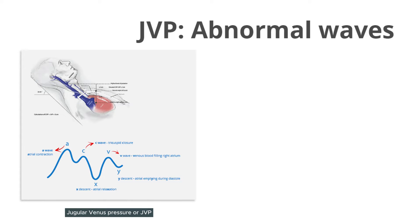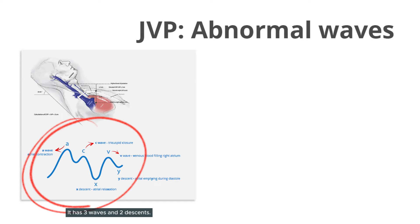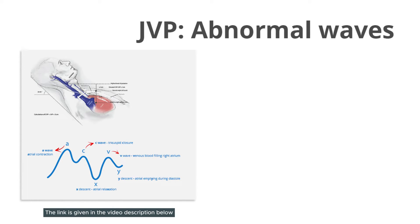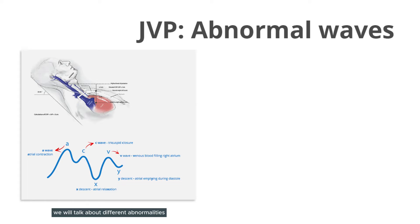Jugular venous pressure, or JVP, is the venous pressure measured in the internal jugular vein. It has three waves and two descents: A, C, and V waves, and X and Y descents. For a quick overview of these waves, please watch our video — the link is given in the video description below and is shown on the right upper screen now. In this video, we will talk about different abnormalities in these waves.